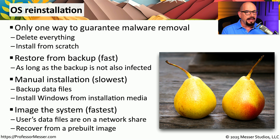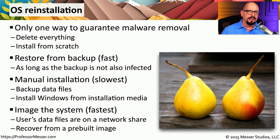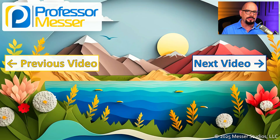The way many organizations perform restoration is by using an image — a predefined configuration for that system that can easily be copied down, including the operating system and all required applications. Since many organizations keep their user data on a network share, deleting everything on a local system and restoring from an image provides a way to get that system back up and running as quickly as possible.